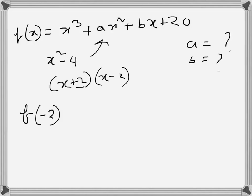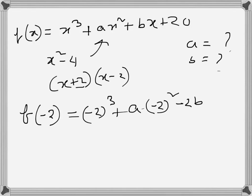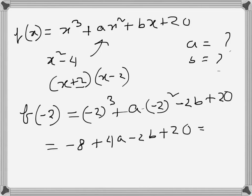So f(-2) = 0 gives us: (-2)³ + a(-2)² - 2b + 20 = 0, which is -8 + 4a - 2b + 20 = 0. Therefore 4a - 2b = -12. That is Equation 1.